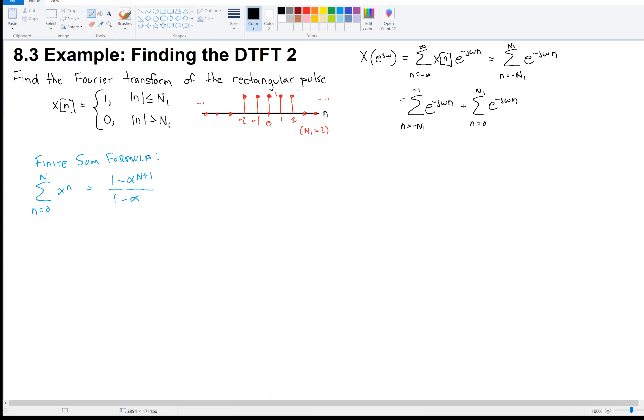Okay, so you see the second term now. Now that I've broken it up, the second term is exactly in this form. So you can form fit it. You see what our alpha is? Our alpha is e to the minus j omega. Our N is n1. So we can immediately apply the formula to the second summation. So let's do that.